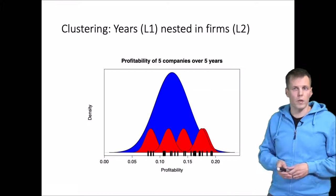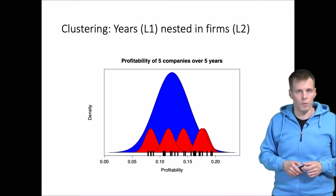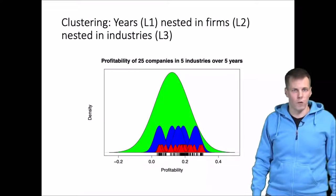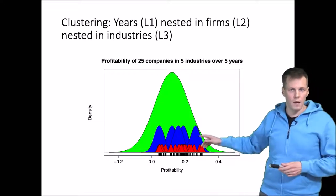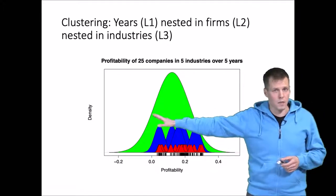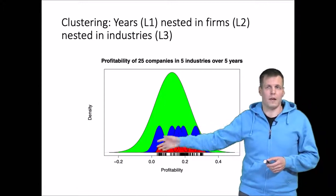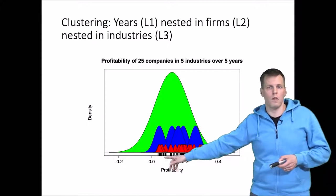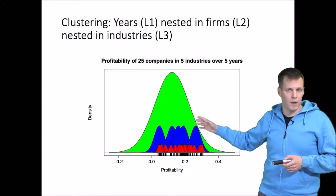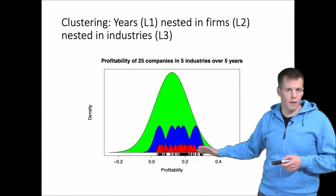So we have two levels: the within-company level and the between-company level, which is also the within-industry level. We can also add more levels — there is no limit. Adding an industry level, we have five different industries, and the industries differ in their profitability: some are highly profitable, others are not. The individual variation in the data is a function of three sources of variation: between-industry, between-company, and year-to-year variation within companies.